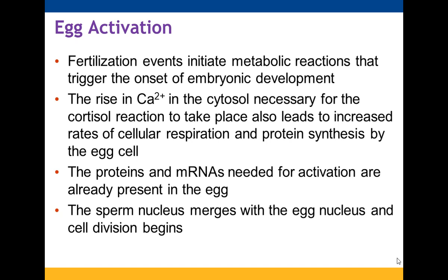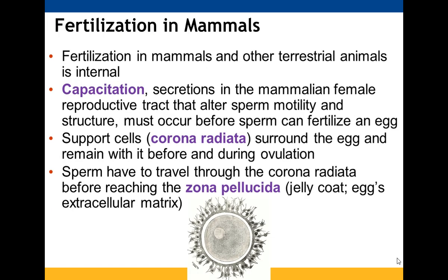Fertilization sets off metabolic reactions that help get the embryo to go through its divisions. The increase in calcium concentrations needed for the cortical reaction also increases the rates of respiration, providing energy and protein synthesis. All the mRNAs needed are already present, so transcription is not required. Once the sperm nucleus merges with the egg nucleus, cell division can take place. In mammals and other terrestrial animals, fertilization is internal. Capacitation occurs when secretions in the female reproductive tract alter sperm motility and structure before the sperm can fertilize an egg.